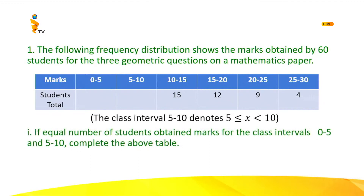Now let's move on to question part 1. If equal number of students obtained marks for the class intervals 0 to 5 and 5 to 10, complete the above table. They have given the total number of students in the class is 60.